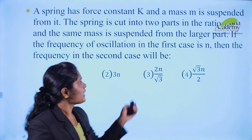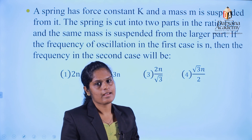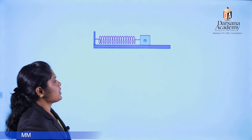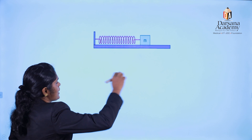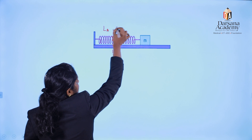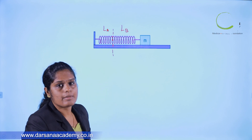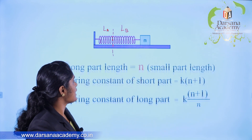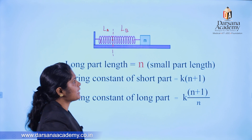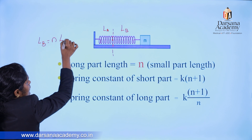Let's take a tip here. Let's take a look at the spring constant for different parts of the spring. That's an easy way. Let's take a spring and divide it. The first part is L_a and the second part is L_b.